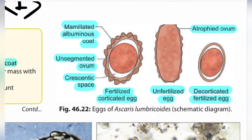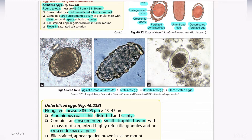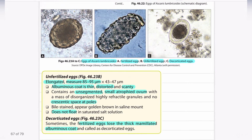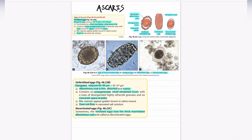The fertilized corticated egg consists of an unsegmented ovum, while the unfertilized egg consists of an atrophied ovum. There is also a crescent space present in the fertilized egg. When the mammillated albuminous coat present in the fertilized corticated egg is removed, it is called the decorticated fertilized egg. In microscopic view, unfertilized eggs are elongated with a thin albuminous coat and a small atrophied ovum.